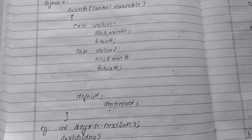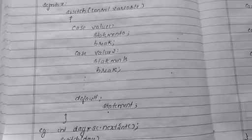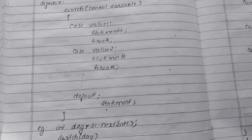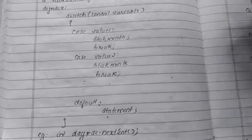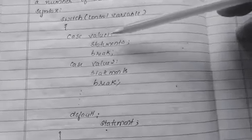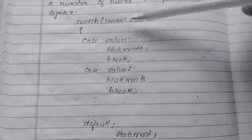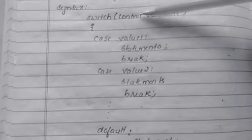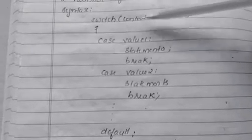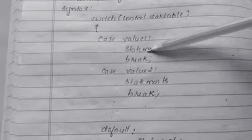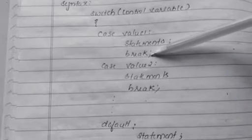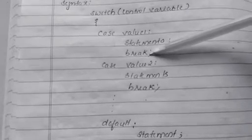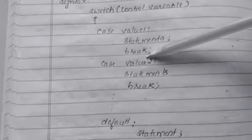In the switch case statement, we are checking the equality condition — whether the control variable is equal to the case value. If the control variable matches with case value one, then the statements associated with case value one will be executed. After case value one, we give the break statement. Switch, case, and break are all keywords.